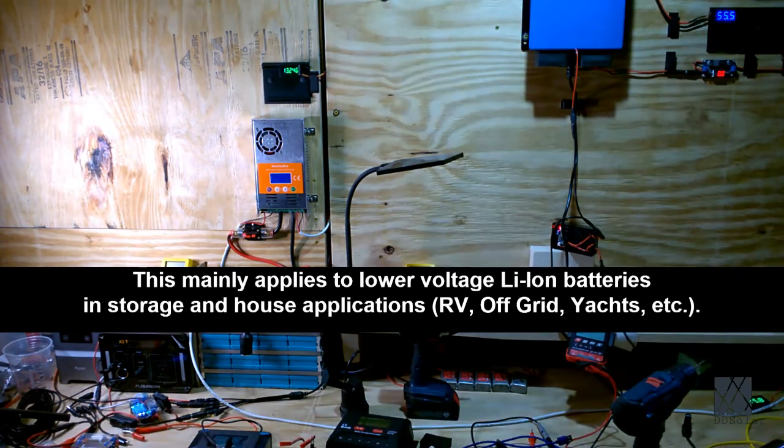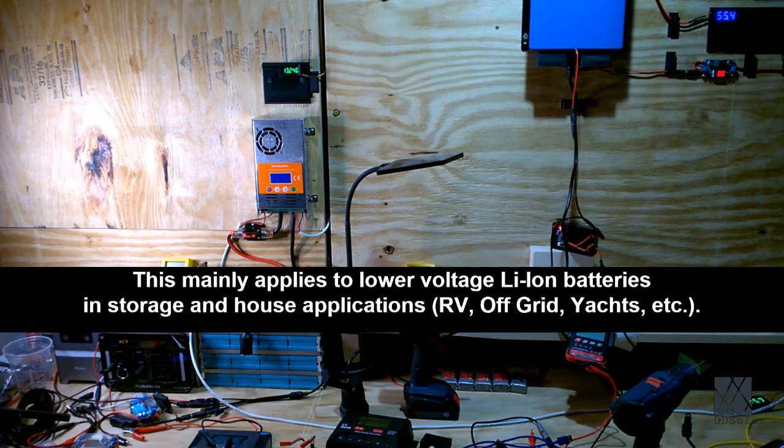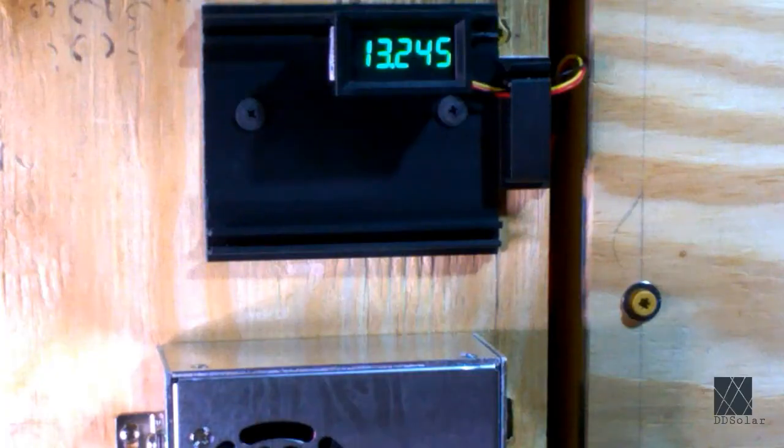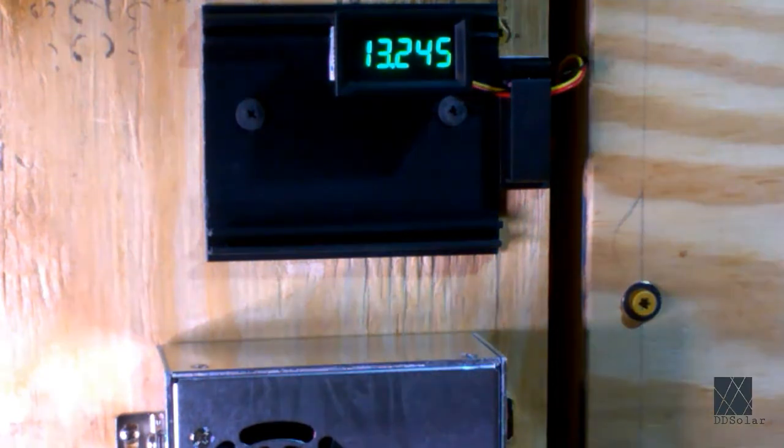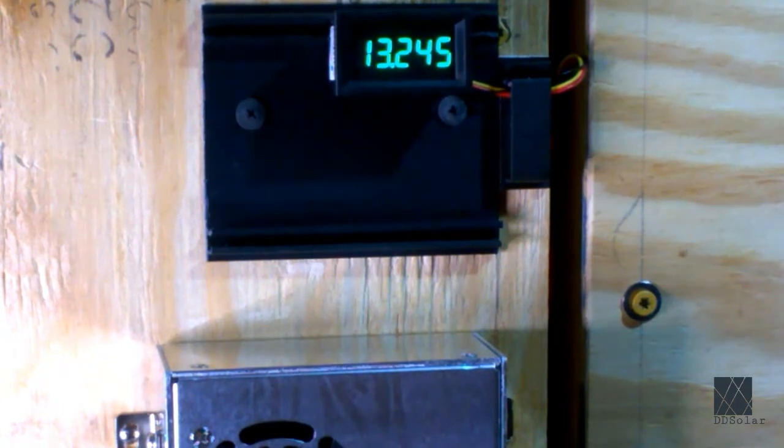For this reason single digit and double digit voltmeters are really not suitable for monitoring these kinds of batteries especially if it's a house battery or storage system for off-grid use. But a three digit voltmeter is just the ticket because it's far more sensitive and it shows far more information on the display than a single or double digit voltmeter could show.